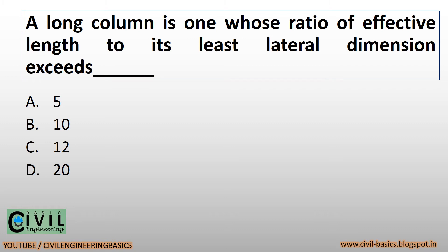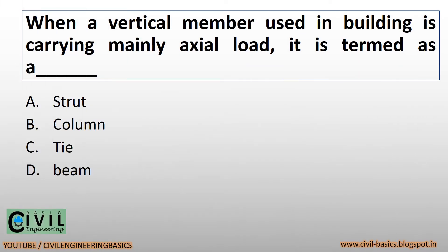A long column is one whose ratio of effective length to its least lateral dimension exceeds 12. When a vertical member used in a building is carrying mainly axial load, it is termed as a strut.